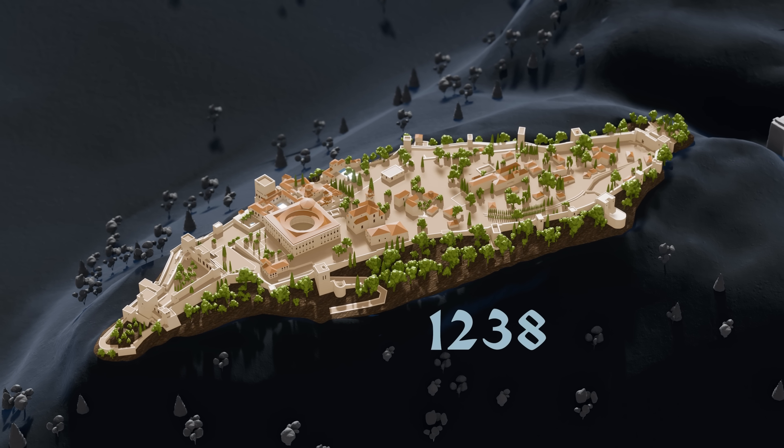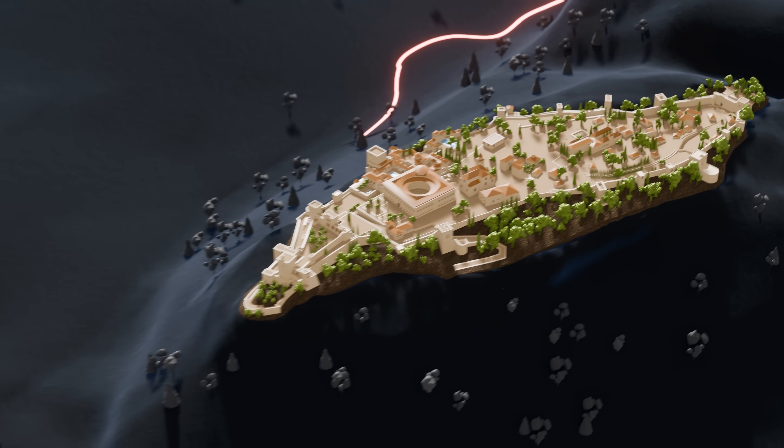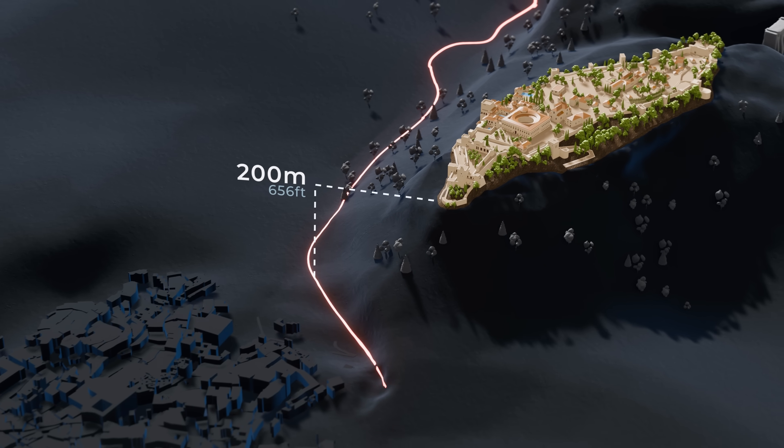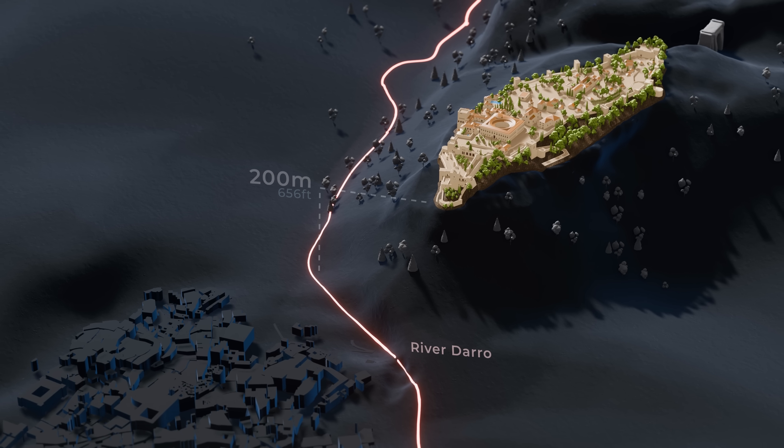When the ruler of Granada commissioned the palace, the engineers had one major problem. The hill was around 200 meters above Granada's main river, and getting water up to the palace would be a huge challenge.